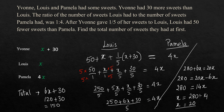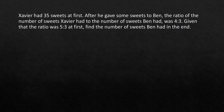The next question: Xavier had 35 sweets at first. After he gave some sweets to Ben, the ratio of the number of sweets Xavier had to the number of sweets Ben had was 4 to 3. Given that the ratio was 5 to 3 at first, find the number of sweets Ben had in the end. This might look complicated, but it is actually one of the easiest problems.